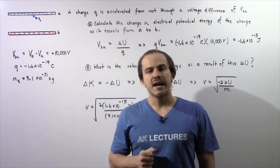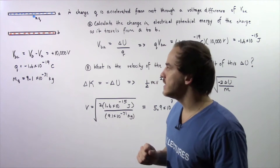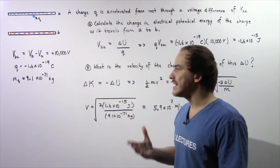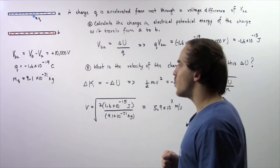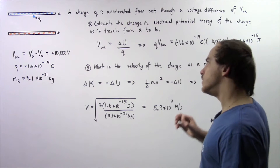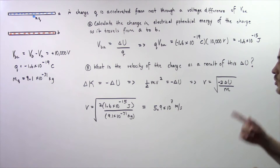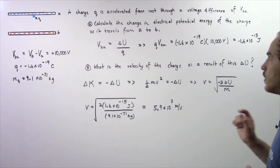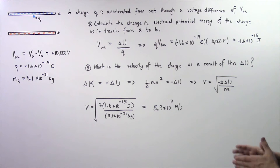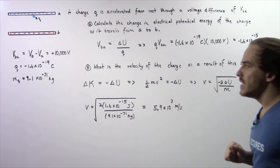Let's examine the following example that deals with electric potential difference, also known as the voltage difference. Let's suppose a charge Q is accelerated from rest through a voltage difference given by VBA.